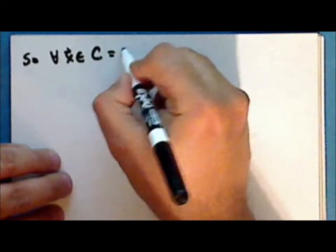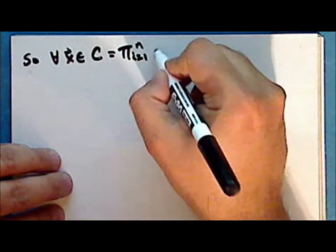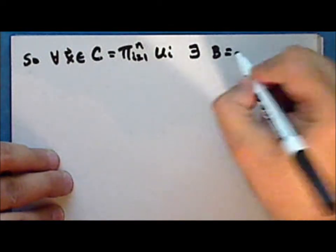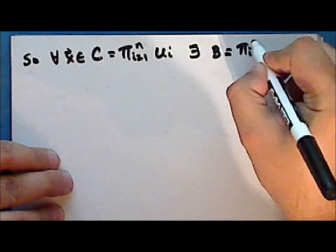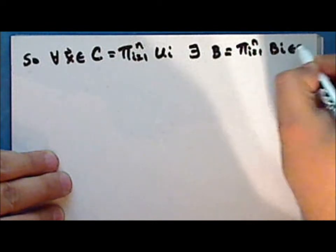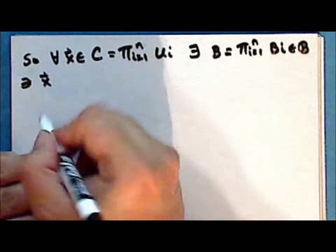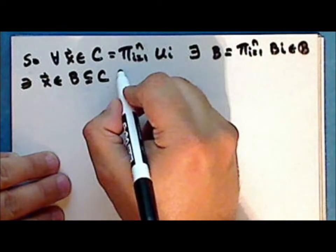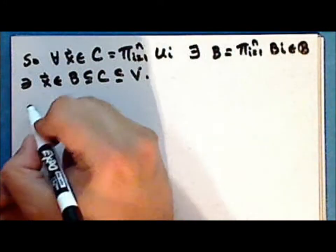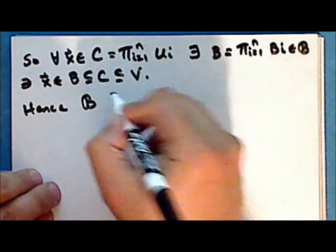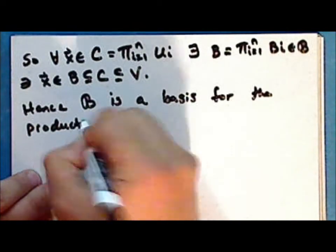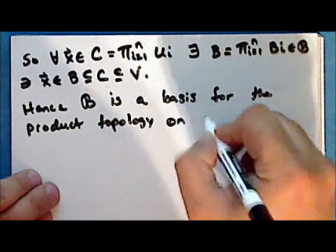So for every element x in the set C, which is a finite product of sets U sub i, there exists an element B which is a finite product of the elements B sub i in the collection script B, such that this point is in the set B, which is a subset of the set C, which in turn is a subset of the open set V. Hence the collection script B is a basis for the product topology on the product set.